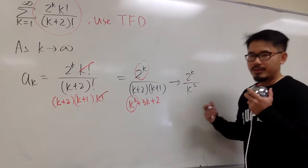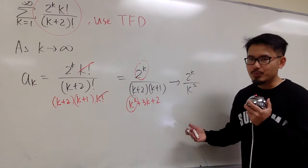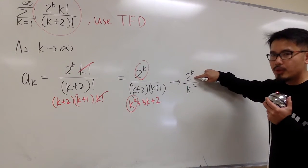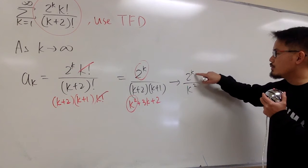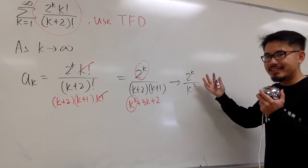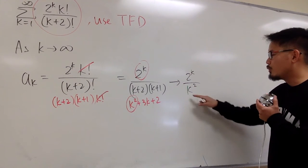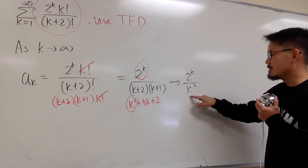And now, you have a couple ways to think about this. The easiest way to think about this is that, because on the top, you have an exponential 2 to the k, this kind of infinity, it's going to be bigger than when you have a quadratic, which is the k squared.